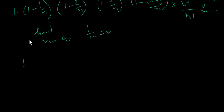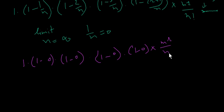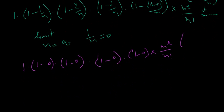So when we evaluate the limit: the first bracket becomes 1, 1 divided by n becomes 0 so that term becomes 1, 2 divided by n becomes 0 so that term becomes 1, and similarly 3 divided by n is 0, giving 1 minus 0 equals 1. All those bracketed terms evaluate to 1. And we are left with m to the power r over r factorial, multiplied by 1 minus m divided by n to the power n.